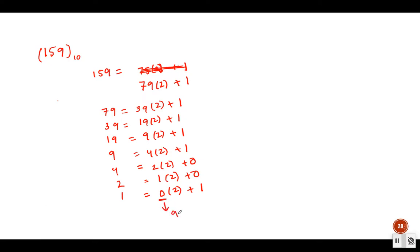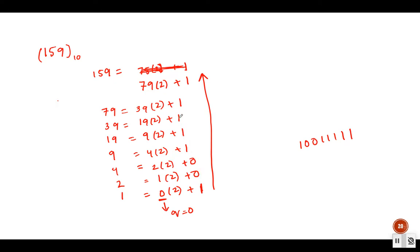Continuing: 4 = 2 * 2 + 0. Then 2 = 1 * 2 + 0. Then 1 = 0 * 2 + 1. We stop because q = 0. Printing all remainders in reverse order gives the binary expansion: 1 0 0 1 1 1 1 1, which is 8 digits — the binary representation of decimal 159.